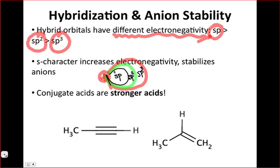S character increases electronegativity, and this shows you why. Bringing electron density closer to the nucleus, as the SP orbital does, stabilizes the negative charge by placing it close to a positive charge. As a result of this stabilization, the conjugate acids of SP hybridized carbon-hydrogen or other nitrogen-hydrogen bonds are more acidic, stronger acids.